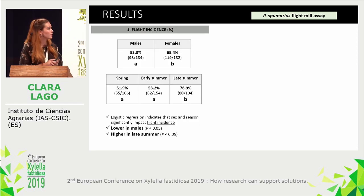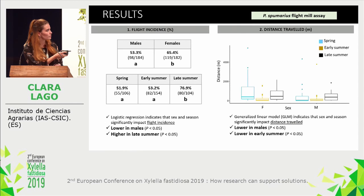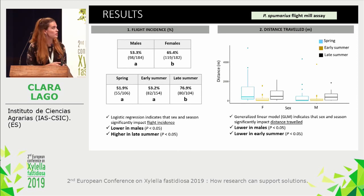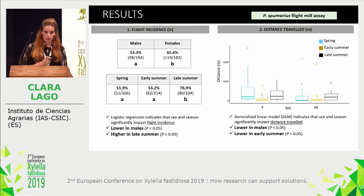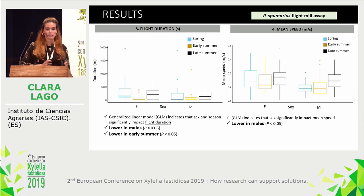Using logistic regression, we found that sex and period of the year significantly impact flight incidence, which is lower in males and higher during late summer. Distance traveled was significantly lower in males and also significantly lower during early summer. Flight duration was also significantly lower in males and during early summer. Mean speed was significantly lower in males than females.